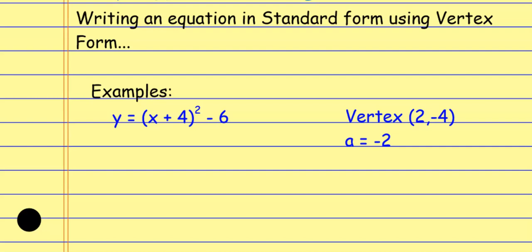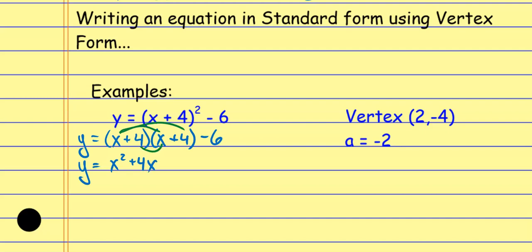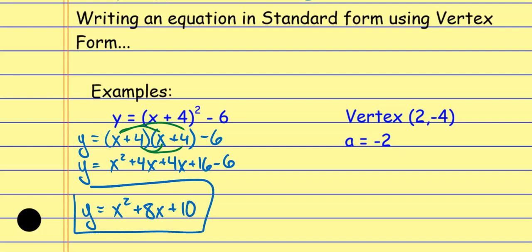For example, if I've got y equals x plus 4 squared minus 6 and I want to write it in standard form, I multiply it out. X plus 4 squared is x plus 4 times x plus 4 — when you square a binomial you have to write it twice and multiply it out. Distributing the x gives x squared plus 4x, distributing the 4 gives 4x plus 16. The minus 6 tags along, and combining like terms gives y equals x squared plus 8x plus 10.